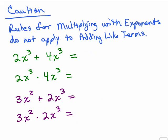Just a couple things to keep in mind here. The rules for multiplying with exponents using the product rule are not the same as the rules for adding like terms. If we have 2X cubed plus 4X cubed, I'm adding.